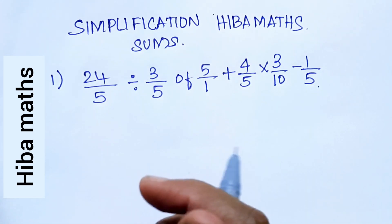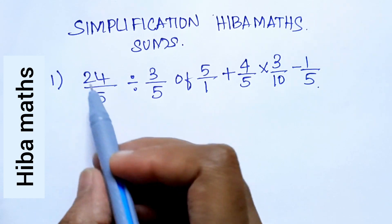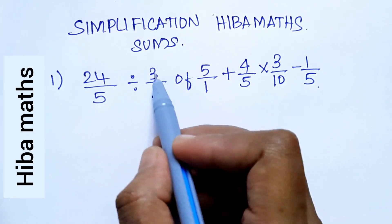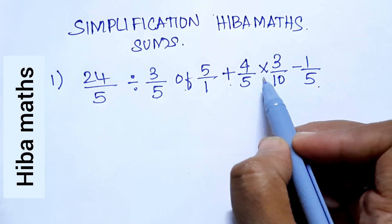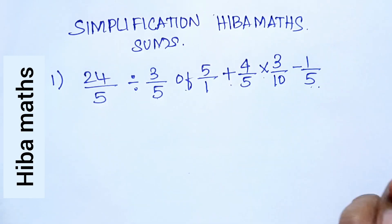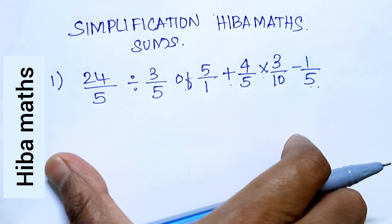Now we will solve this sum. Question: 24 by 5 divided by 3 by 5 of 5 by 1 plus 4 by 5 into 3 by 10 minus 1 by 5. I will solve it.